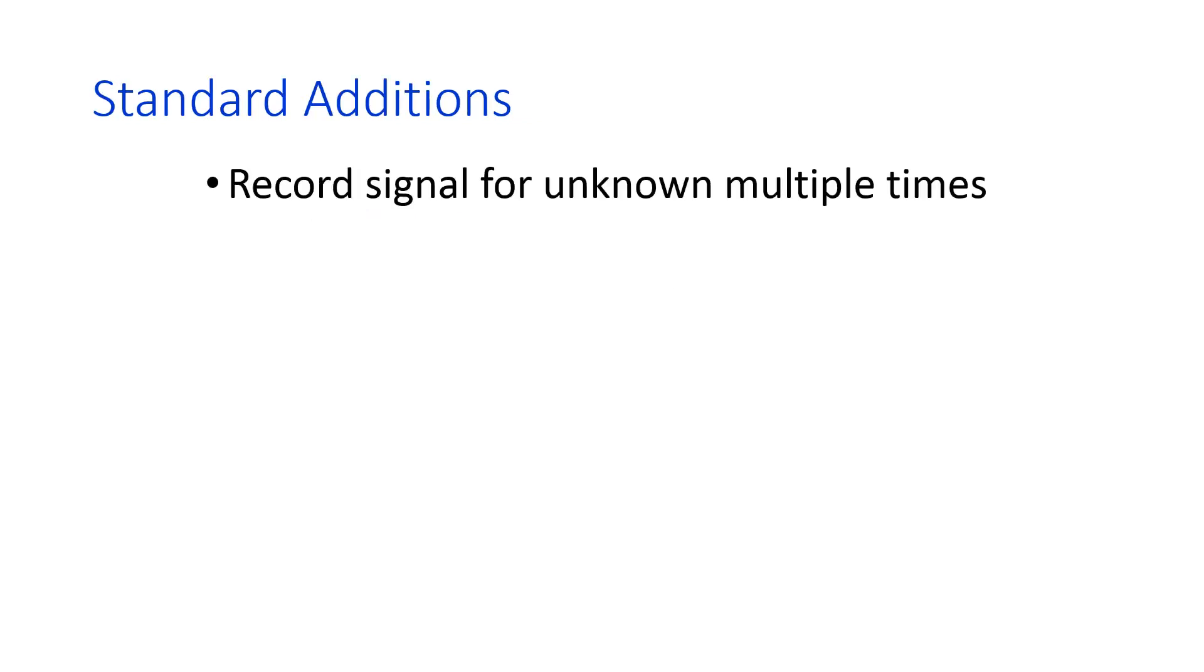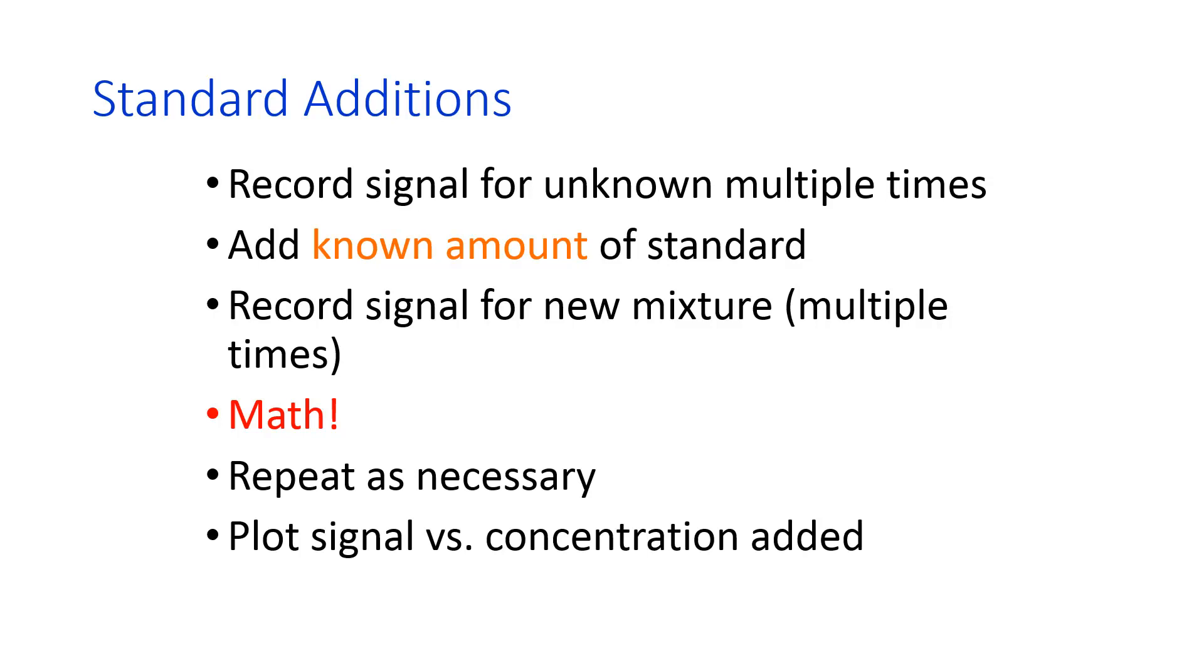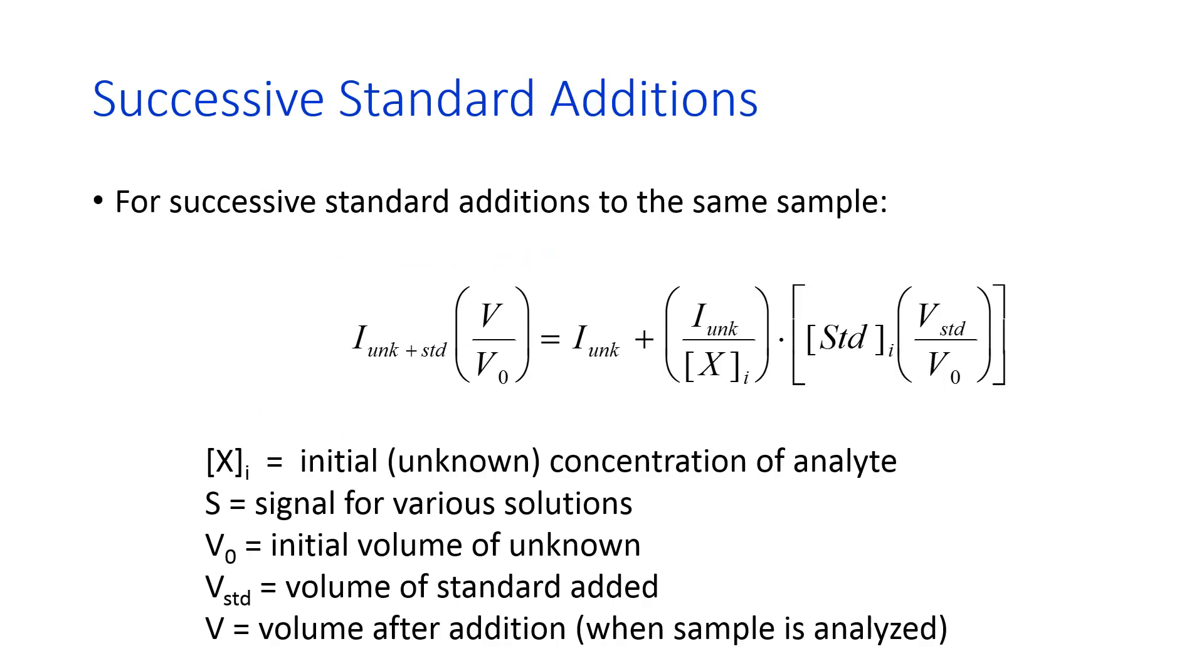One of those other analytical methods is called a standard addition. What you do in this is, you analyze your unknown multiple times, and then you add a known amount of the standard. Record the signal for this new mixture multiple times. Do some math, which we'll talk about in a second, and then repeat as necessary. You make a plot of signal versus the amount of the analyte that you've added, and that plot tells you what the concentration was in your original sample.